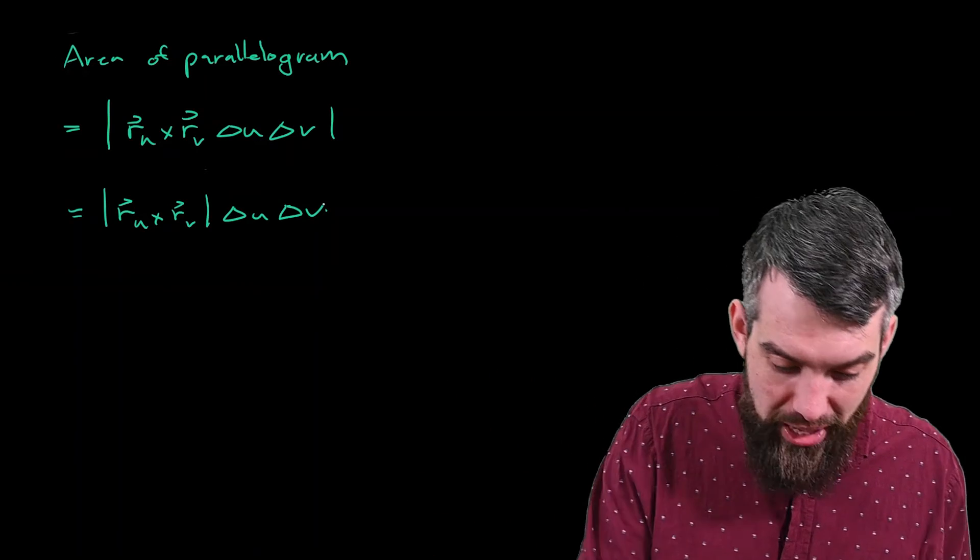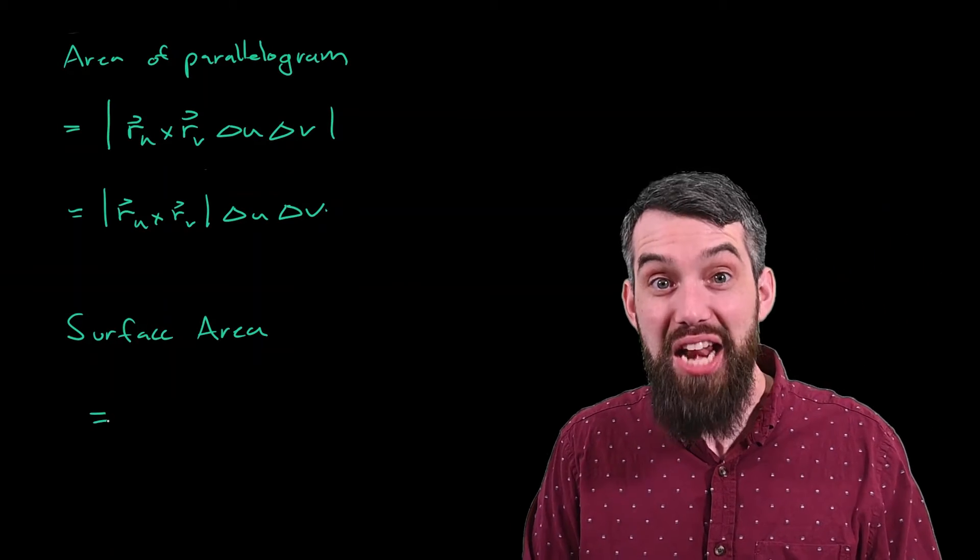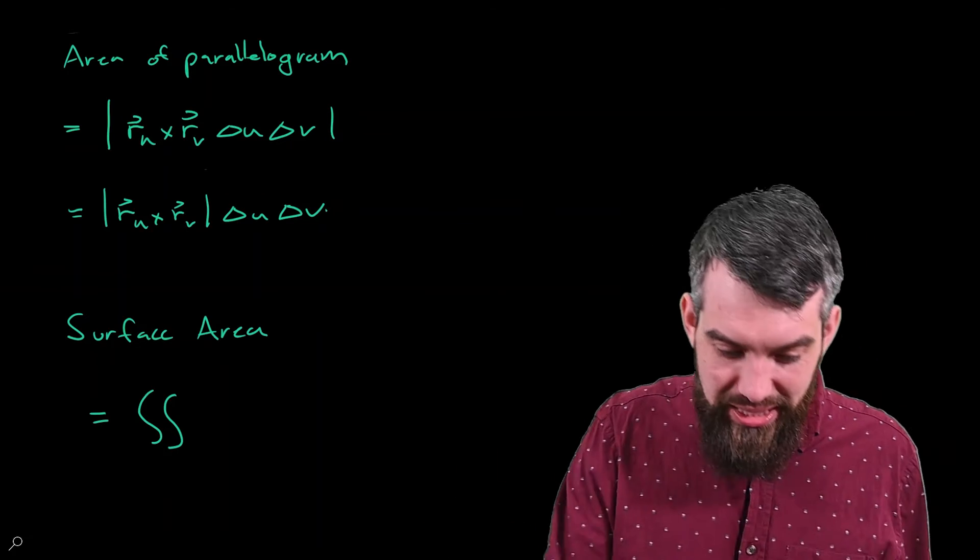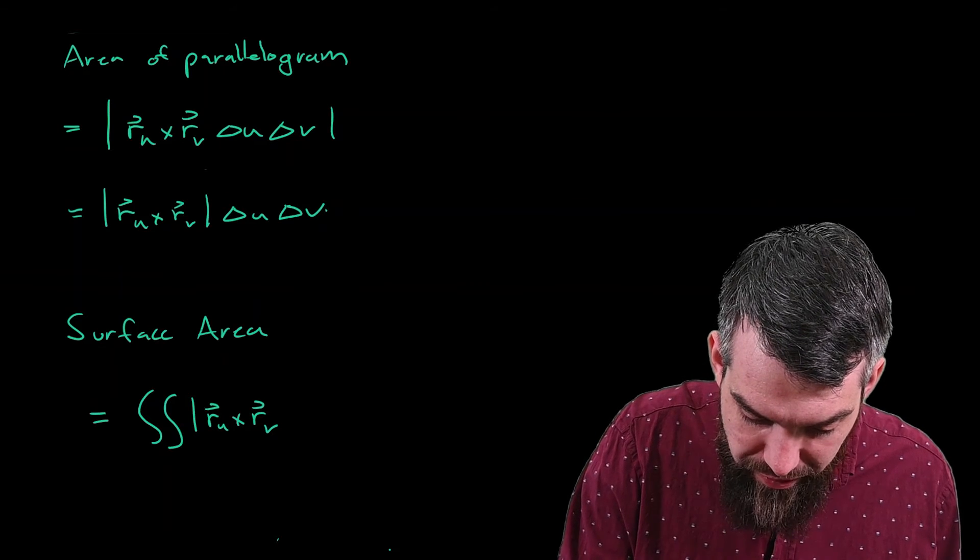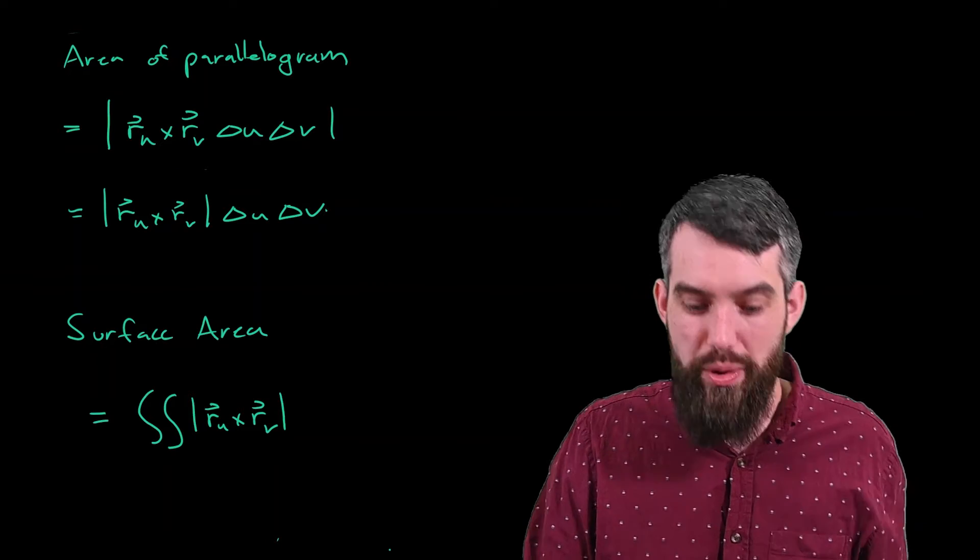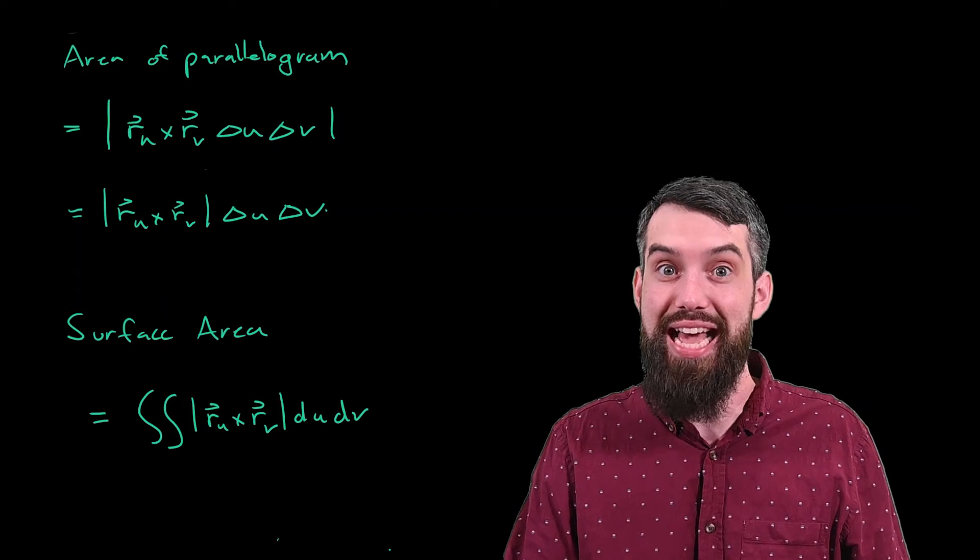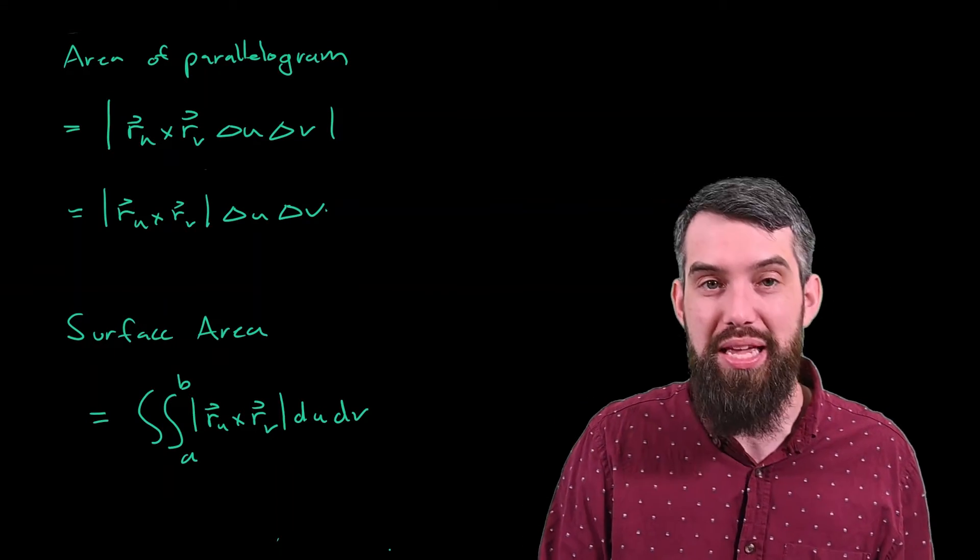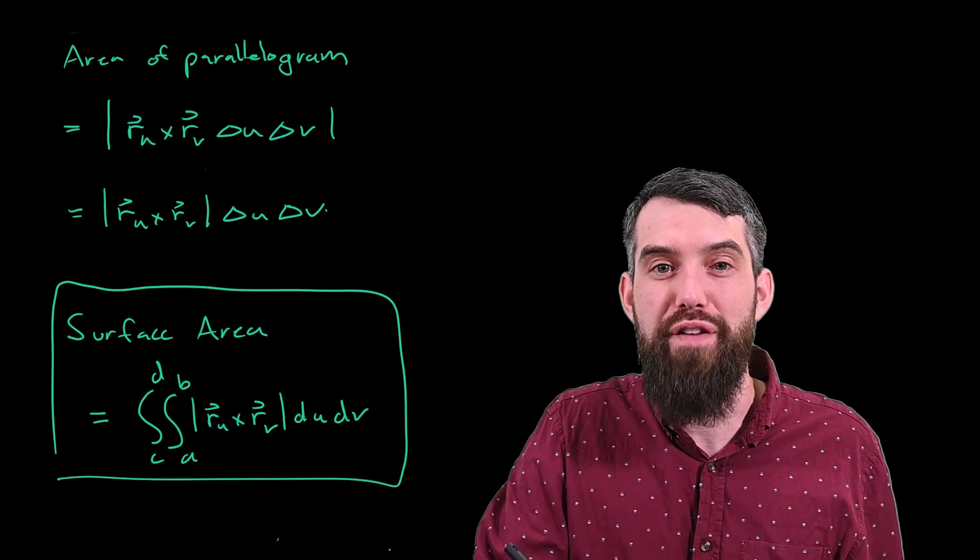So my final formula is that the surface area is equal to, well, adding up a whole bunch of areas is going to give me a double integral of, well, precisely this object, the magnitude of R of U cross R of V. In the limit that delta U and delta V go to zero, we replace them with a dU and a dV, the infinitesimal versions of them. And then the U's can be assigned generically to go between an A and a B, and the V's generically between a C and a D. And that is our final formula.